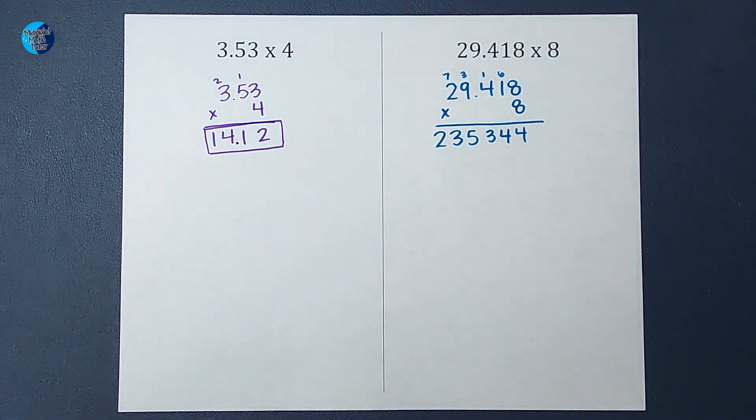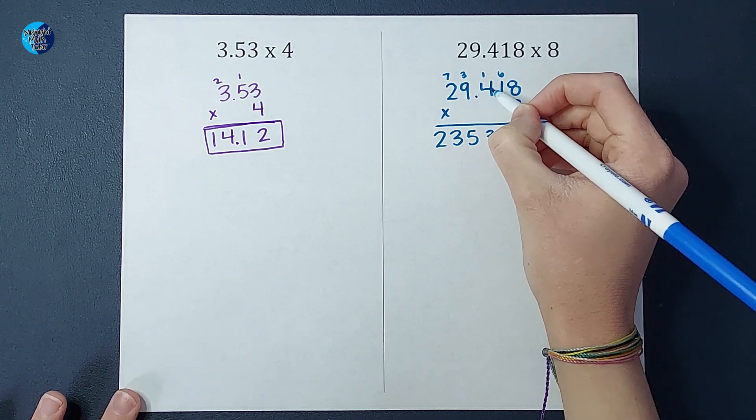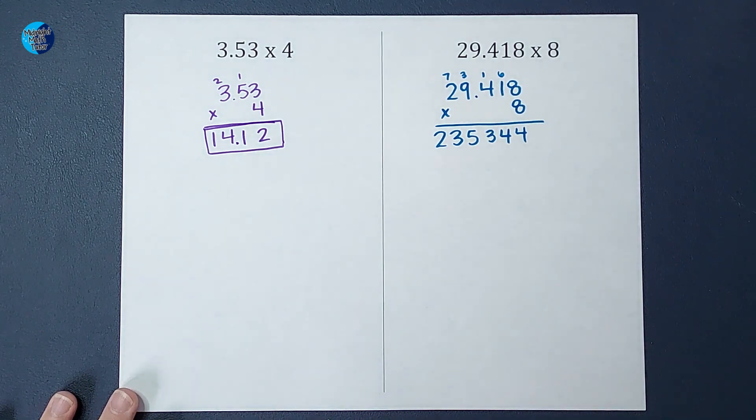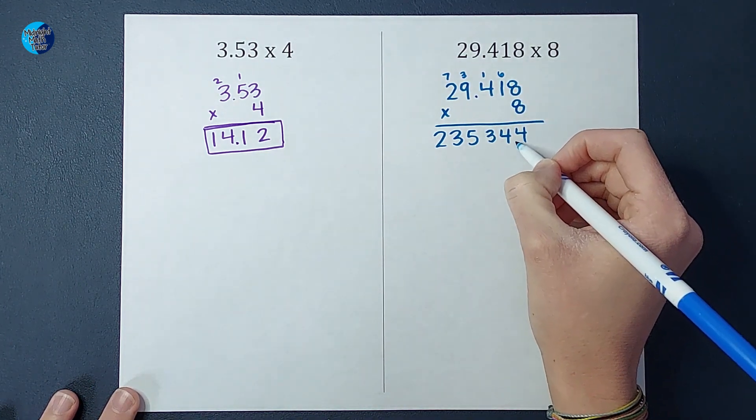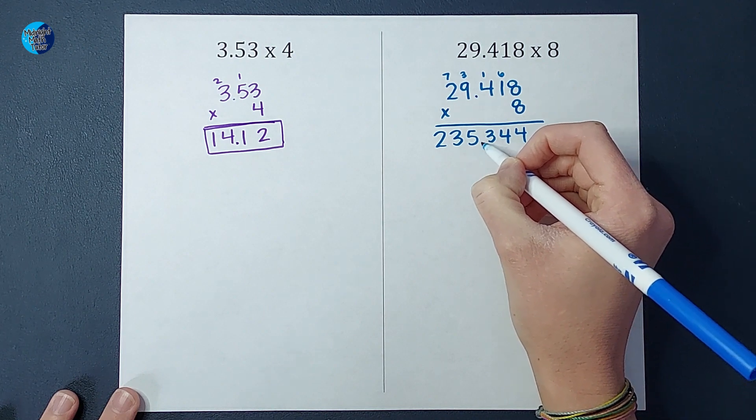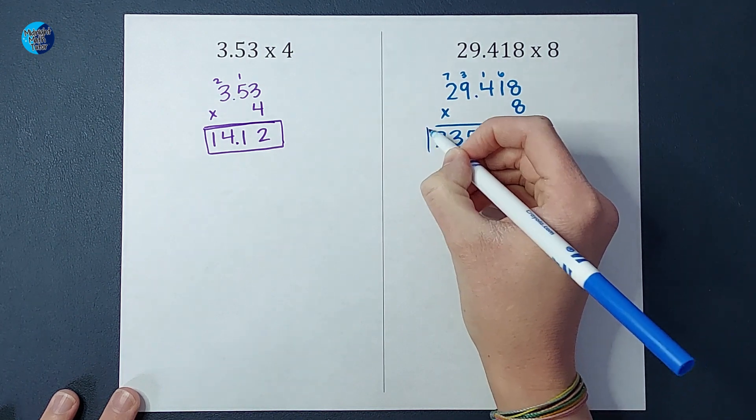Okay, now is when I need to pay attention to the decimals again. So I look at my decimal up here. I count there's one, two, three numbers behind it. So I go one, two, three. All right, there we go.